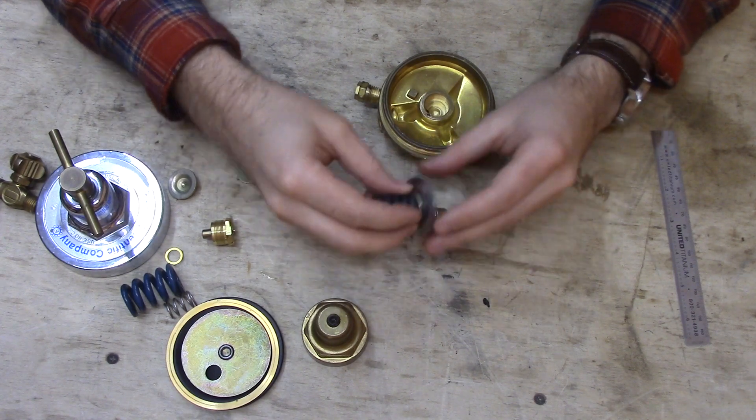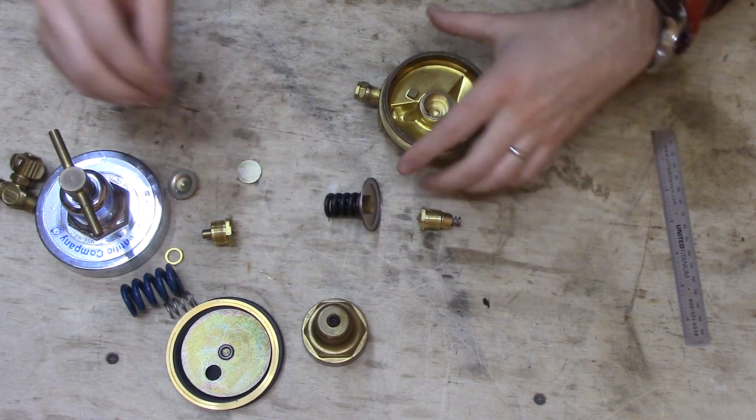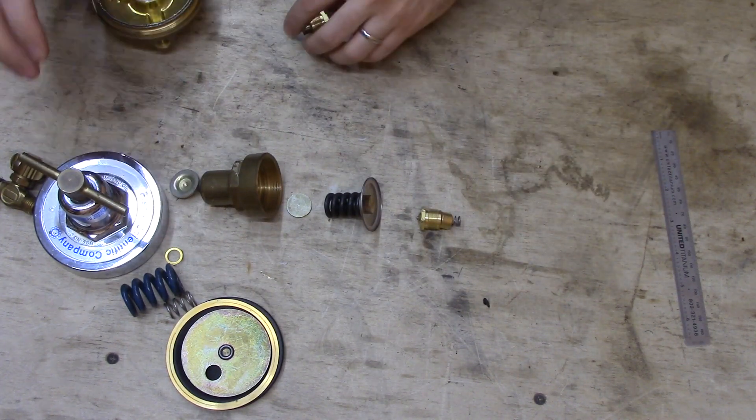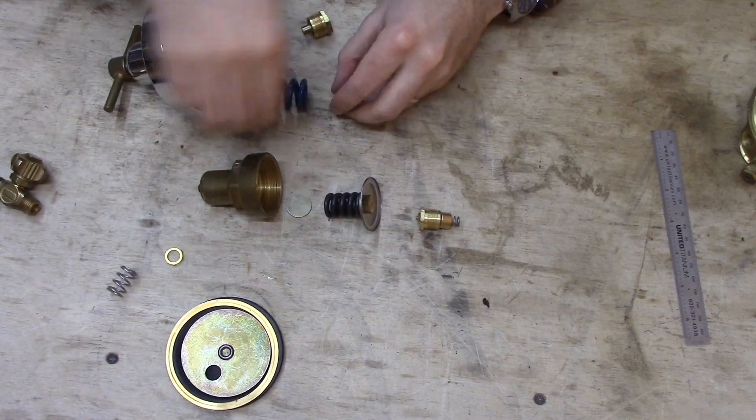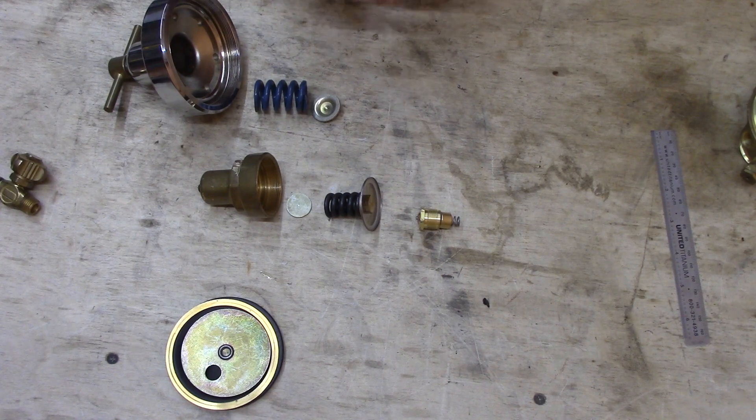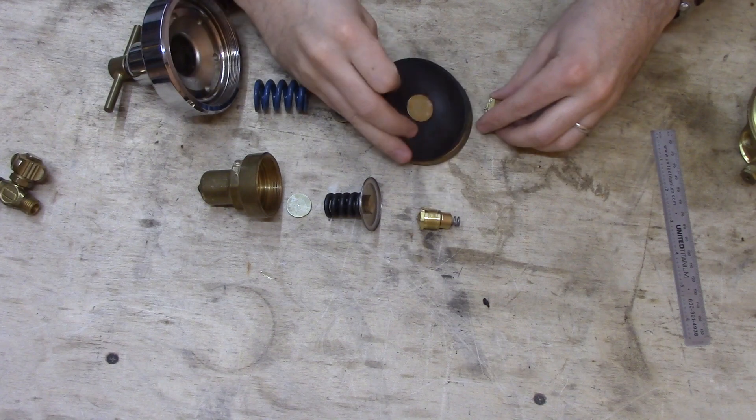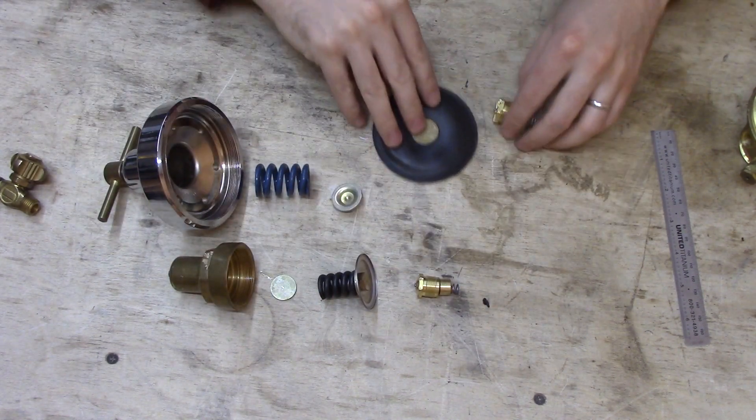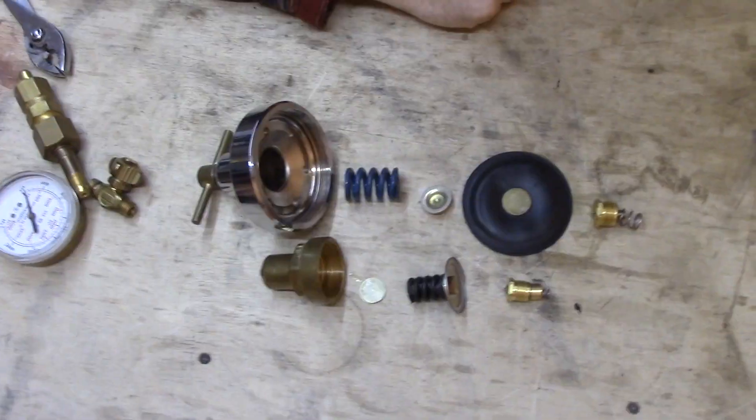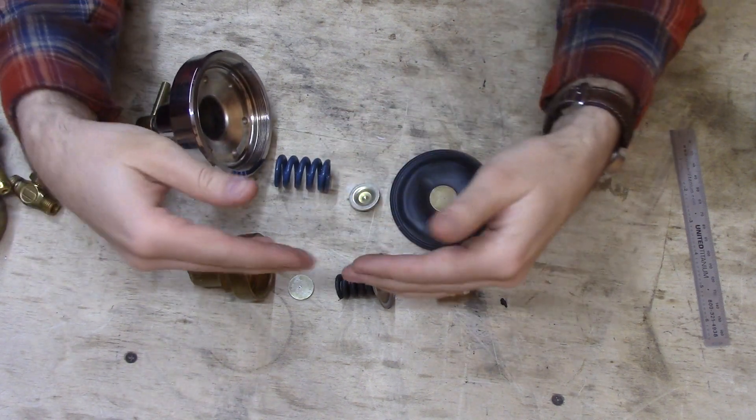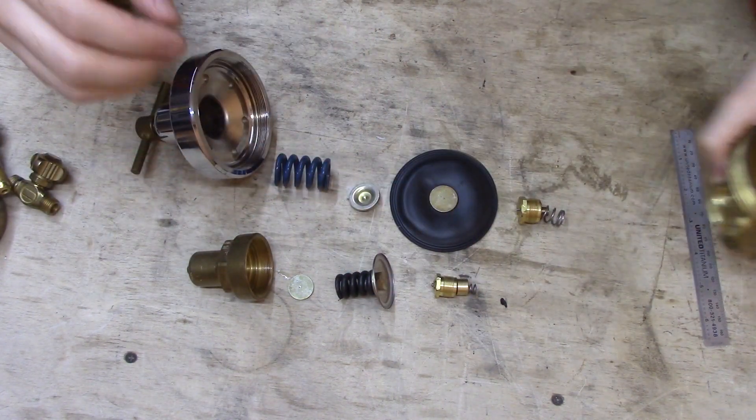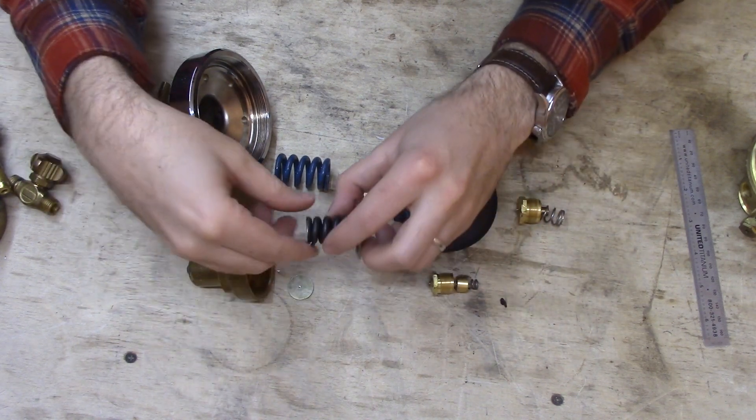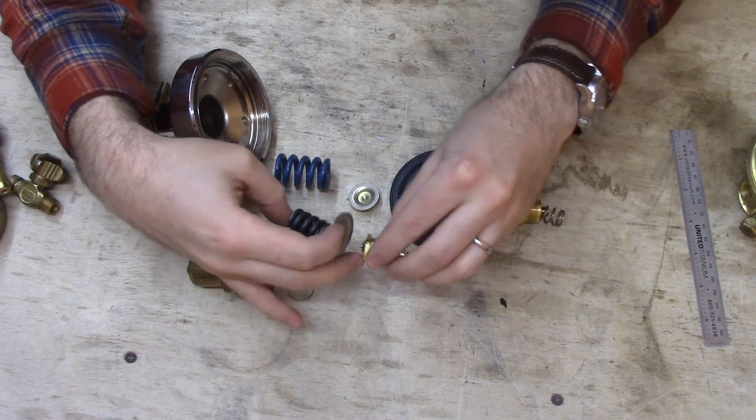So kind of laying it all out, these are the components of the first regulator stage, and then these are the components of the second. So laying it all out, you can see the gas enters this first chamber on this side of this first stage diaphragm. It keeps coming to this chamber until the force compresses this spring enough to let the valve close.